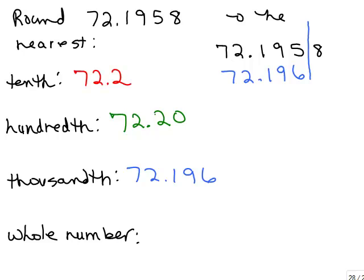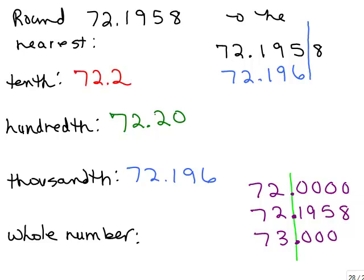How about the whole number? If I look at this number, 72.1958, the question is I don't want to have the decimal at all. So the question is, do I keep it at 72 or do I go up to 73? You could think of 72 as 72.0000 and the same thing here. So now looking at that, what do you think? Well, the 1 is after the decimal, right? That's after the line. So I'm going to keep it at 72. I am not going to round up. So that's the only one that did not get rounded up.